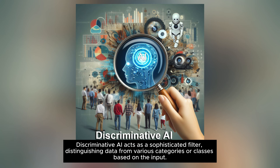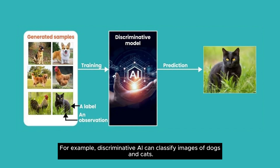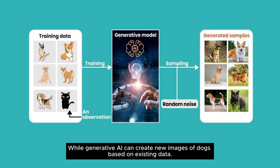Discriminative AI acts as a sophisticated filter, distinguishing data from various categories or classes based on the input. For example, discriminative AI can classify images of dogs and cats, while generative AI can create new images of dogs based on existing data.